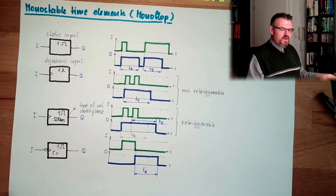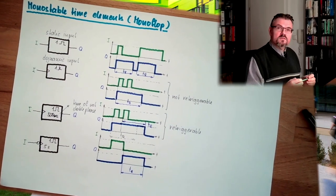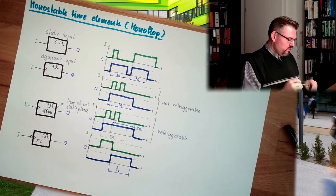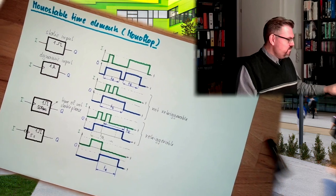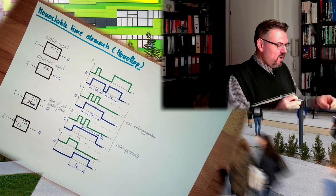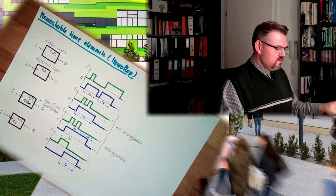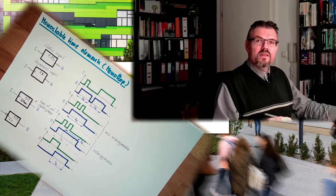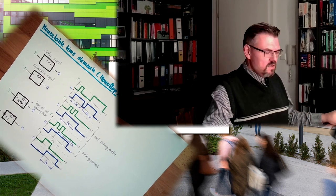Monostable time elements, or monoflops. Those monostable time elements can be used to produce timing circuits. How such timing circuits are built, we will discover in the next videos.